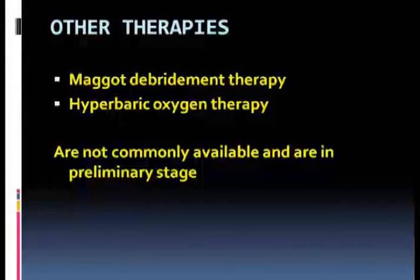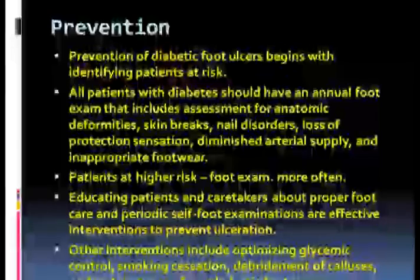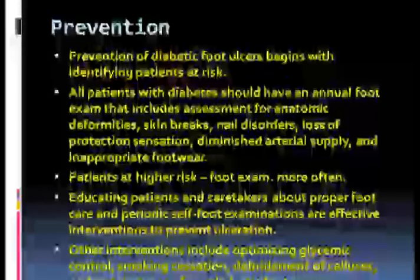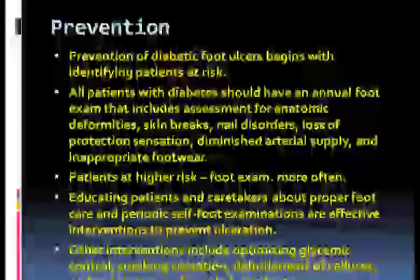Other therapies such as maggot debridement therapy or hyperbaric oxygen therapy are not commonly available and are still in a preliminary stage. Prevention is an important aspect in diabetic foot care. Prevention of diabetic foot ulcers begins with identifying patients at risk. All patients with diabetes should have an annual foot examination that includes assessment for anatomic deformities, skin breaks, nail disorders, loss of protective sensation, diminished arterial supply, and inappropriate footwear. Patients at higher risk should have foot examinations more often. Educating patients and caretakers about proper foot care and periodic self-foot examinations are effective interventions. Other interventions include optimizing glycemic control, smoking cessation, debridement of calluses, and certain types of prophylactic foot surgery.